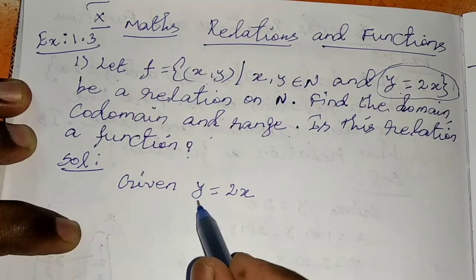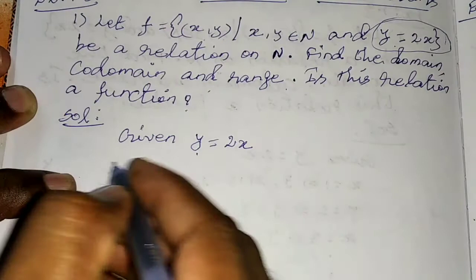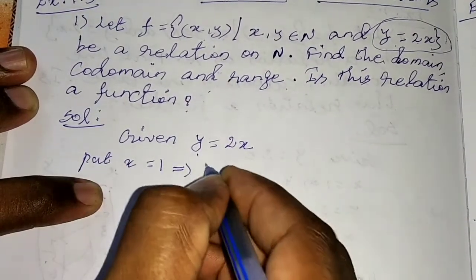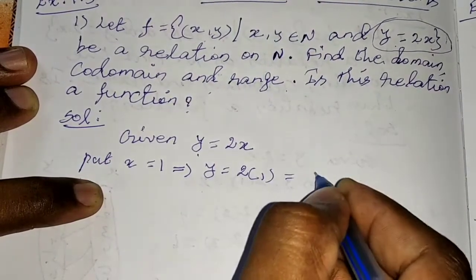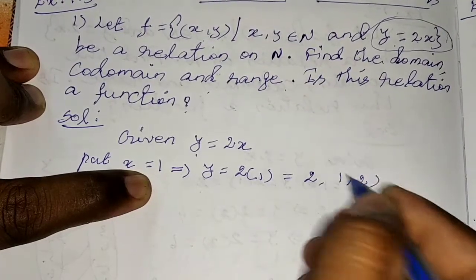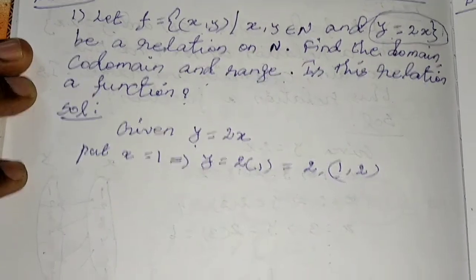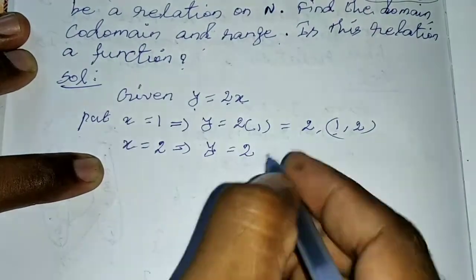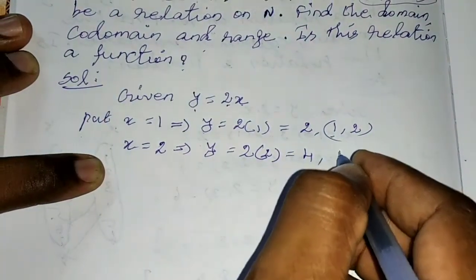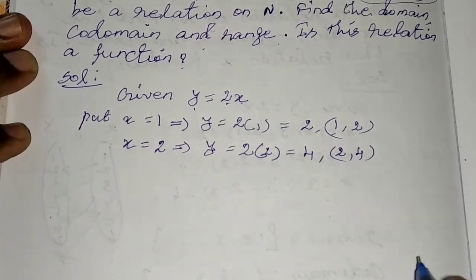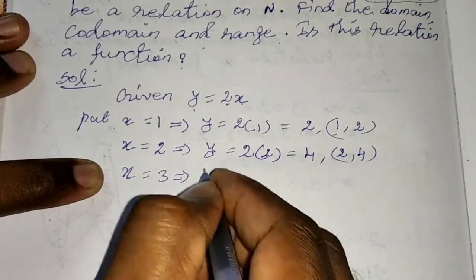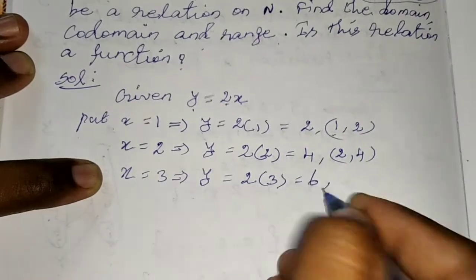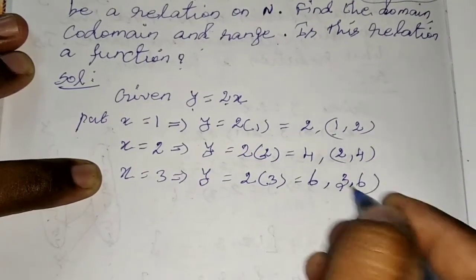First, the given condition is y = 2x, where x and y are natural numbers. Put x = 1: y = 2×1 = 2, so (1, 2). Put x = 2: y = 2×2 = 4, so (2, 4). Put x = 3: y = 2×3 = 6, so (3, 6).